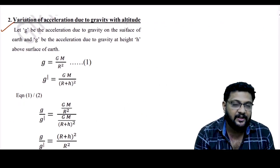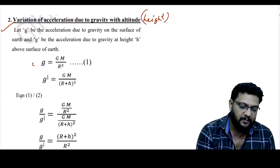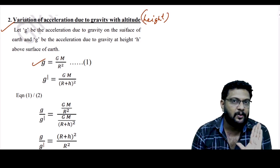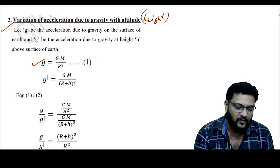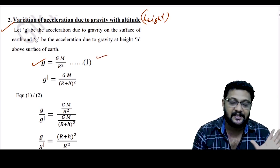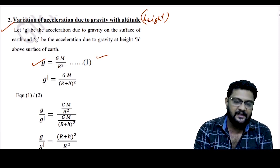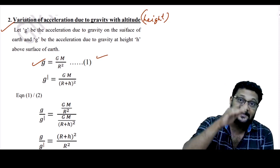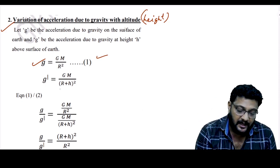Variation of acceleration due to gravity with altitude: the main equation is g = GM/R² (Equation 1). At height h, g' = GM/(R+H)² (Equation 2). Depth formula uses R minus H.